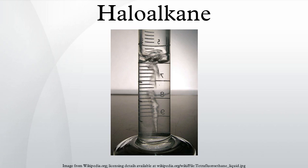Occurrence: haloalkanes are of wide interest because they are widespread and have diverse beneficial and detrimental impacts. The oceans are estimated to release 1 to 2 million tons of bromomethane annually. A large number of pharmaceuticals contain halogens, especially fluorine. An estimated one-fifth of pharmaceuticals contain fluorine, including several of the most widely used drugs. Examples include 5-fluorouracil, fluoxetine, paroxetine, ciprofloxacin, mefloquine, and fluconazole.